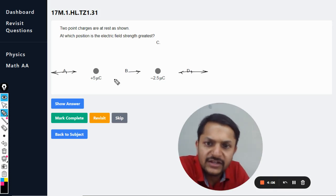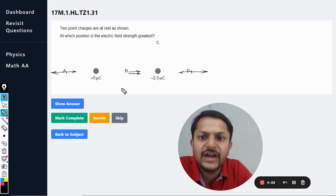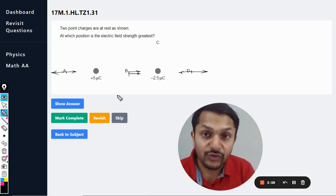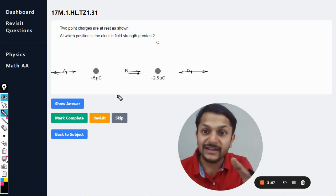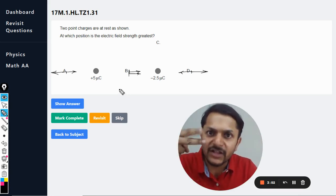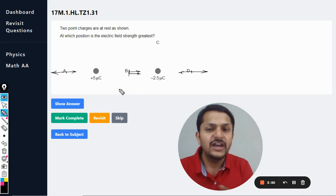At B, the positive charge would be repelling this B towards right and the negative would be attracting it towards right. So there is a high chance that yes, B will be our answer because both of the electric fields are getting added at this B. B is going to have the maximum electric field and the angle between the two electric fields is zero degrees, which means definitely this is indeed going to be maximum.